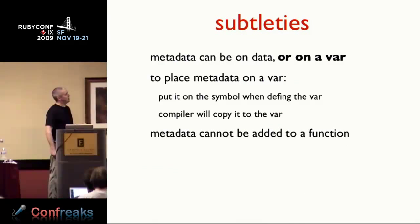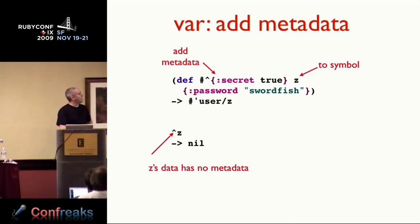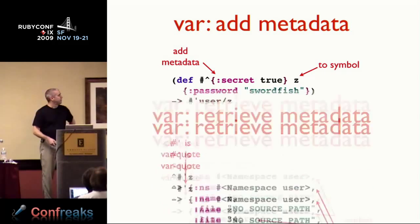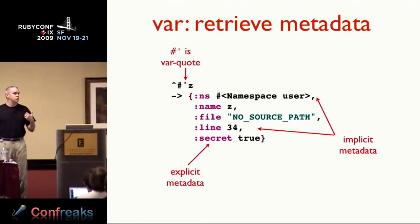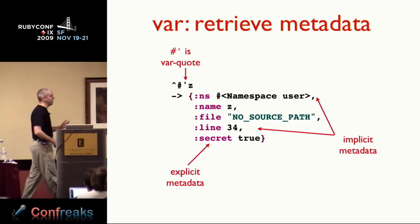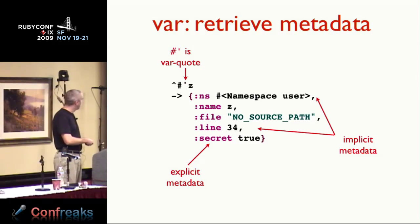There's syntactic sugar: pound-caret says 'add metadata,' caret says 'pull the metadata off.' When there's a one-character shortcut, the language designer wants you to do it — getting metadata off things is considered an interesting idea. Metadata can be on the data itself or on the var. I could 'def' and add the metadata to the symbol instead of the data. I can get it back off by pulling the var's metadata. Notice there's metadata I didn't put on there — Clojure dogfoods itself, using metadata for all its documentation, debugging, and that kind of stuff internally.